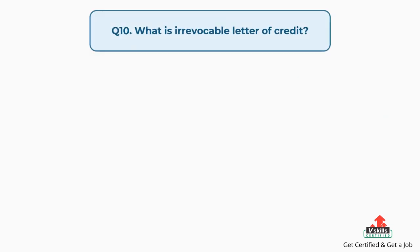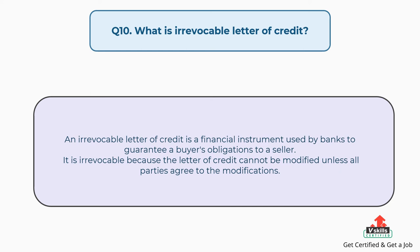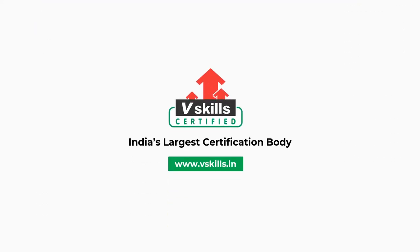Question number ten: what is an irrevocable letter of credit? The answer is: an irrevocable letter of credit is a financial instrument used by banks to guarantee a buyer's obligations to a seller. It is irrevocable because the letter of credit cannot be modified unless all parties agree to the modifications. For more such videos, subscribe to our channel.